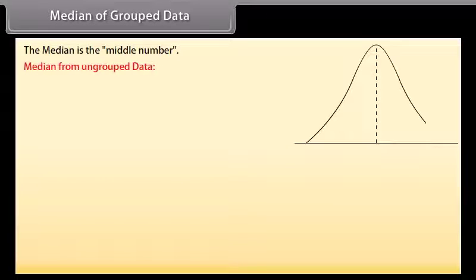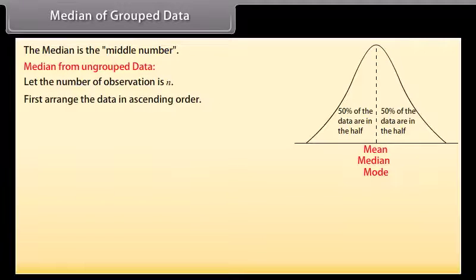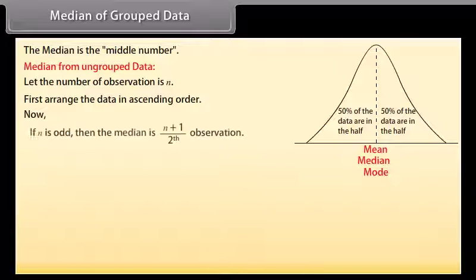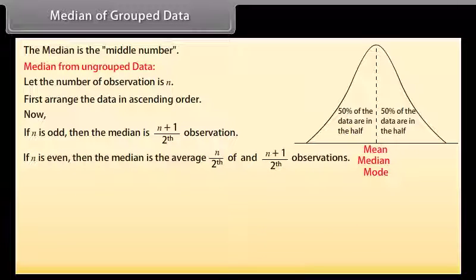Median of grouped data. The median is the middle number. For ungrouped data, let the number of observations be n. First, arrange the data in ascending order. If n is odd, the median is the (n plus 1) divided by 2th observation. If n is even, the median is the average of the (n divided by 2)th and the (n divided by 2 plus 1)th observations.